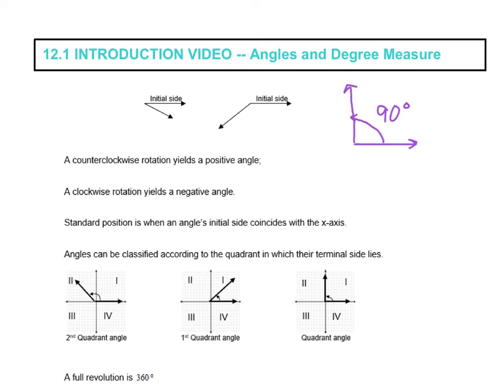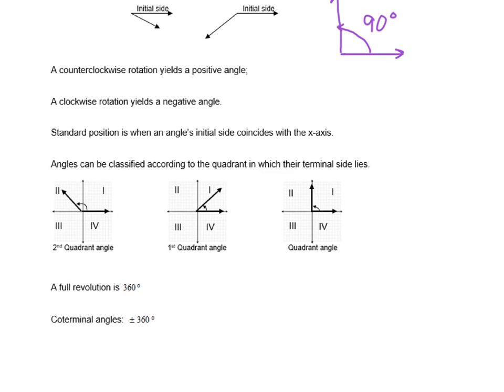A clockwise rotation yields a negative angle. So, what we're saying there is, if this is my angle, this is my initial side, if I go clockwise this way, let's say to this position right there, that is going to be a negative 90 degree angle.